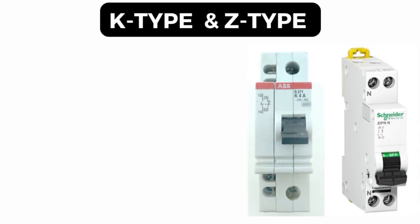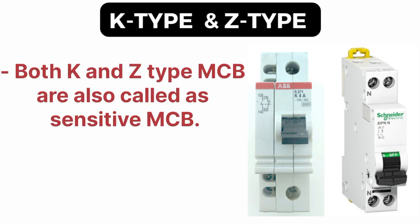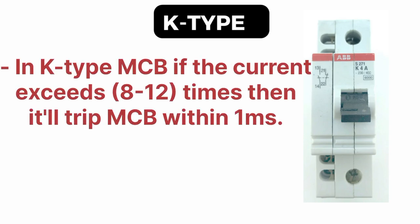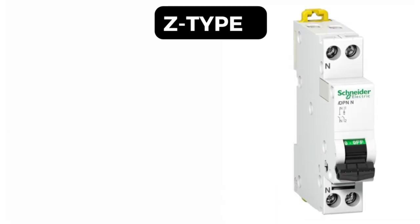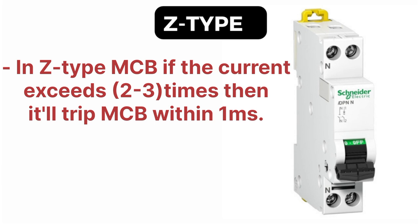K type and Z type MCBs are also called sensitive type MCBs, because if the current exceeds even a little bit, it will trip the MCB suddenly. For K type MCB, if the current exceeds 8 to 12 times the rating, it will trip within 1 millisecond. For Z type MCB, if the current exceeds 2 to 3 times, it will also trip within 1 millisecond.